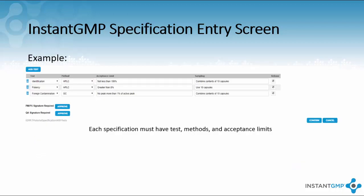The test section of the specification is made up of four parts: test, method, acceptance limit, and sampling. Test is what variable you wish to verify. Method is the means in which the variable will be tested. Acceptance limit is what is classified by your site or FDA regulation as acceptable. Sampling is how much of the material you will use to perform the test.